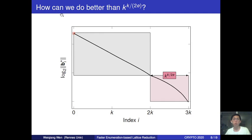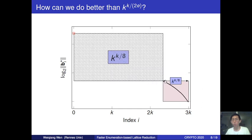So how can we do better? The main obstacle is the enumeration cost over the last block of size k, which takes k^{k/(2e)}. Instead of running SDBKZ with a size-k SVP solver, we change to run SDBKZ with a reduced-size SVP solver, so that the enumeration cost over this reduced size is well controlled within the expected cost. But this also introduces a straight line outside the last block with a larger slope, so that the first basis vector has a larger norm—achieving a worse Hermit and root Hermit factor.